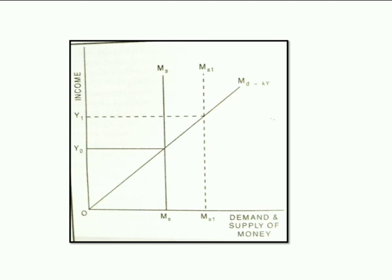In the figure, Ms and Ms1 are supply of money curves, and Md = kY is the demand for money. Y0 is the equilibrium income where Md equals Ms. If money supply increases to Ms1, the demand for money increases and income increases to Y1.